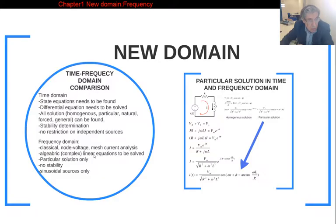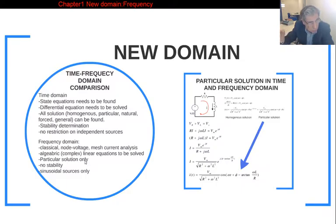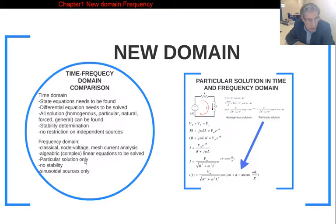In this domain, we cannot find all the solutions found in the time domain — we will only find the particular solution. If the circuit is stable, the general solution becomes the particular solution after a few seconds, once the transient (homogeneous) part disappears. So the particular solution is sufficient for practical use.